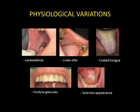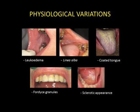Some of the physiological variations are leucoedema, which corresponds to a tissue edema principally in the cheeks; linea alba, which follows the line of the smile; and coated tongue, which consists of a coating on the dorsal surface of the tongue.